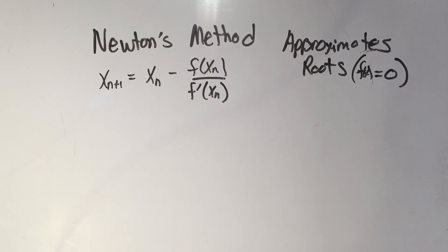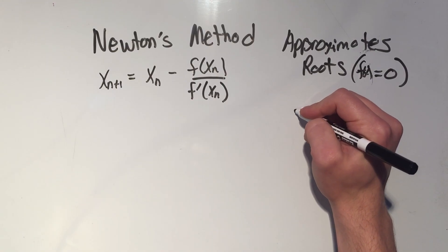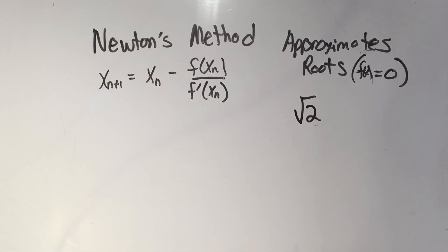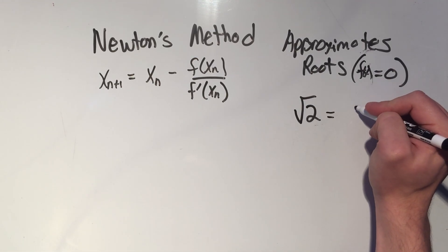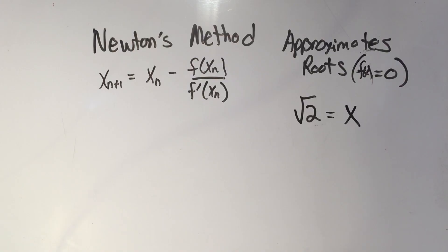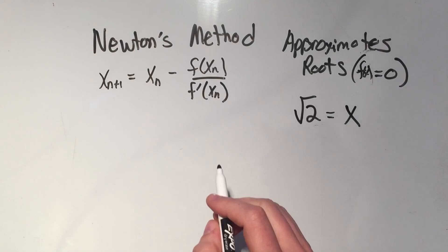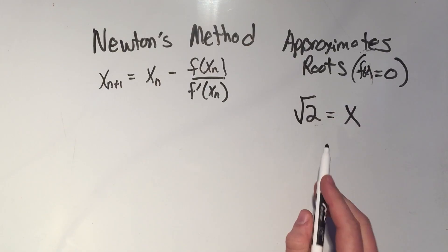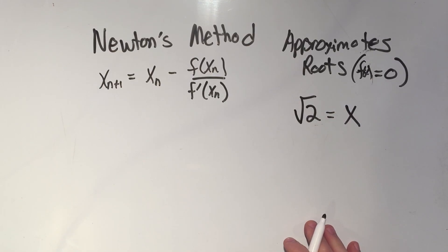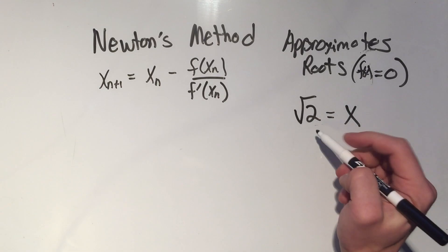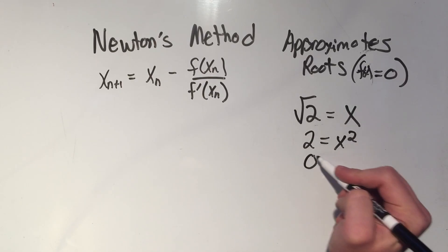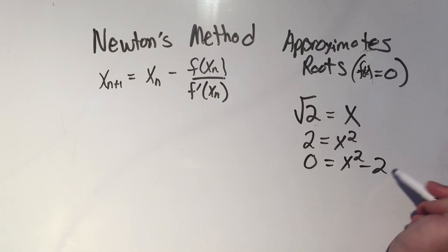For the example we're going to do here, we want to approximate the square root of 2 using Newton's method. Newton's method approximates when your function equals zero, so I'm going to turn this equation into a function. If I square both sides, I get 2 equals x squared, and subtracting 2 gives 0 equals x squared minus 2.